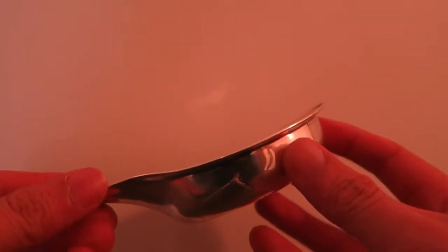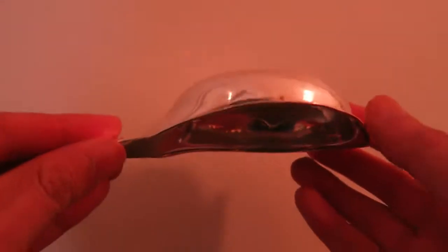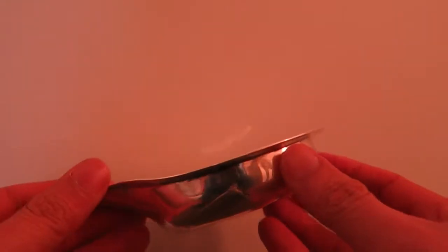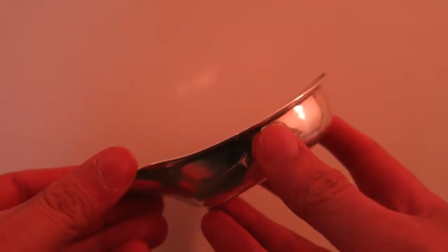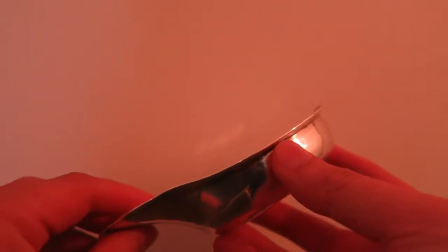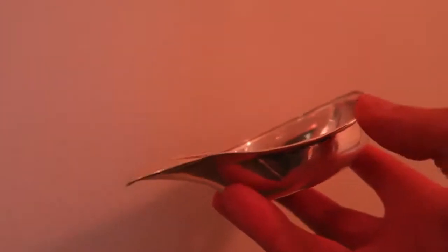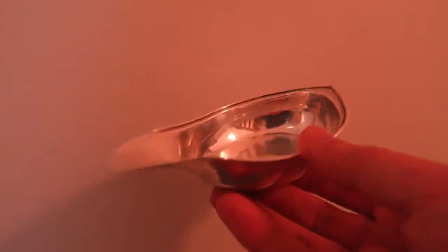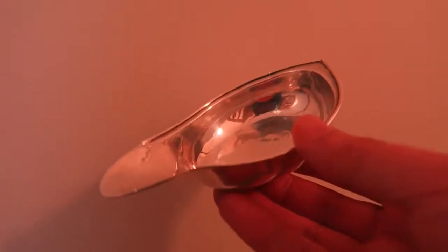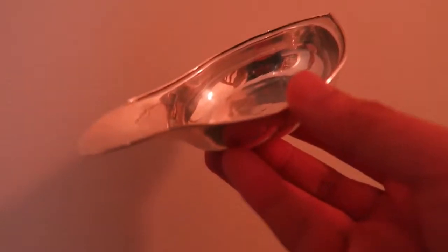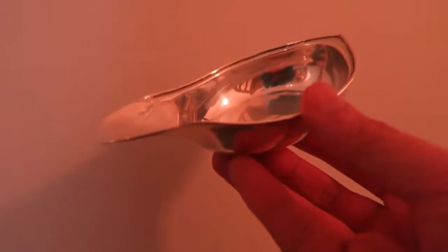This is a rather rare piece of Georgian silverware. This was made during the reign of George III, King George III of England, who famously went mad. And it's from about 1795-1800, so that's about, give or take, 220 years old.